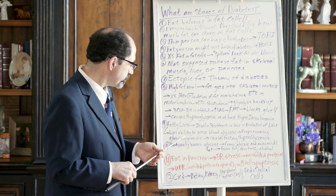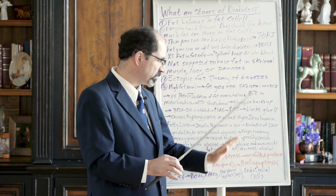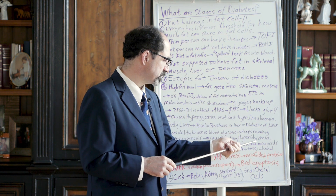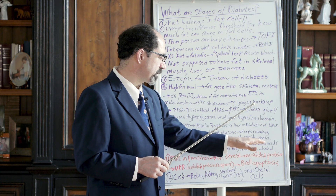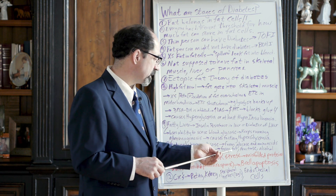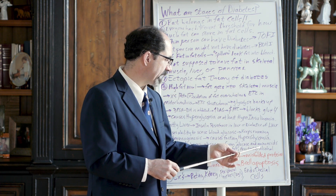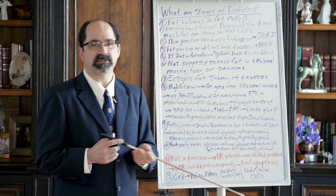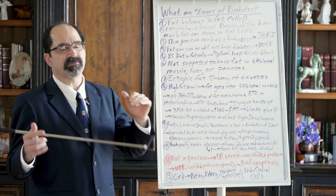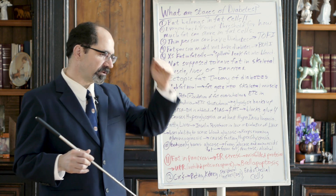Normally the body burns two things: glucose, which comes from starch or conversion of amino acids, and fat. Fat mostly comes from eating dietary fat, but fructose gets converted primarily into fat, and alcohol - two-carbon units go right into becoming acetyl-CoA - is another major source of fat for the body.